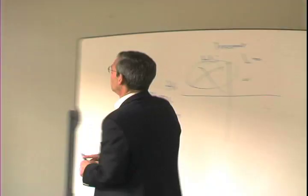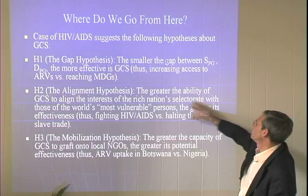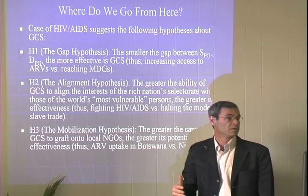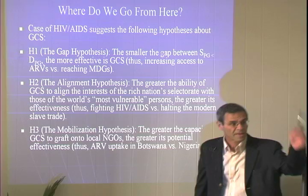Alignment: the greater the ability of global civil society to align the interests of the rich nation's selectorate with those of the world's most vulnerable people, the greater its effectiveness. I think HIV/AIDS is a nice case versus what I call the slave trade, which I've worked on — you can't get people interested in it here in the industrial world.